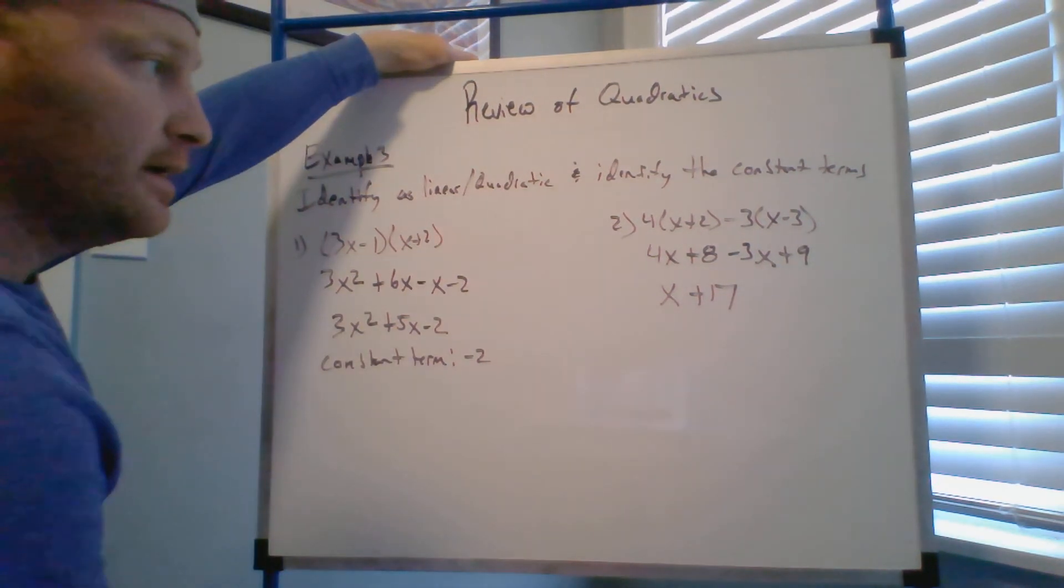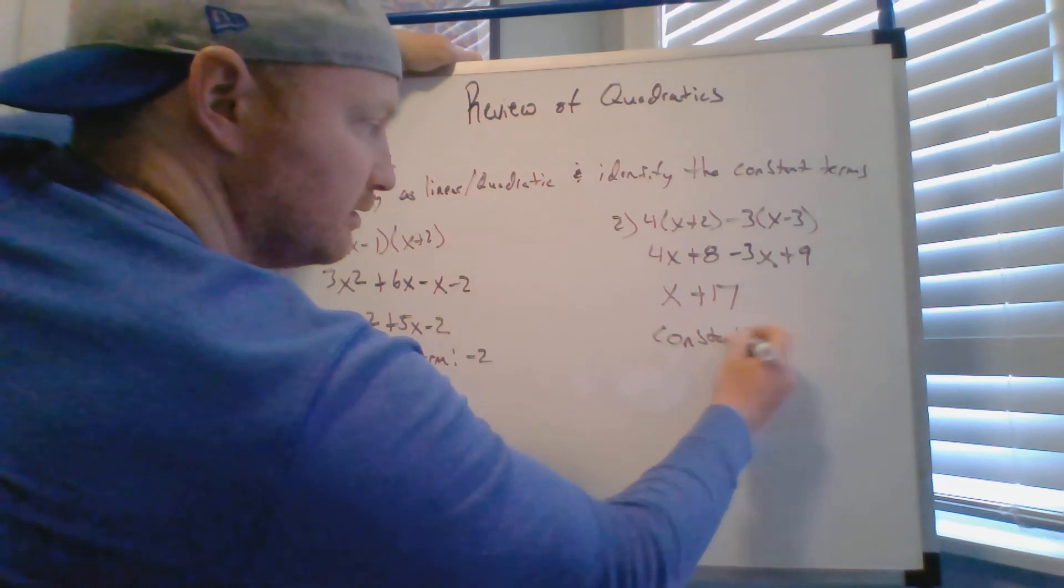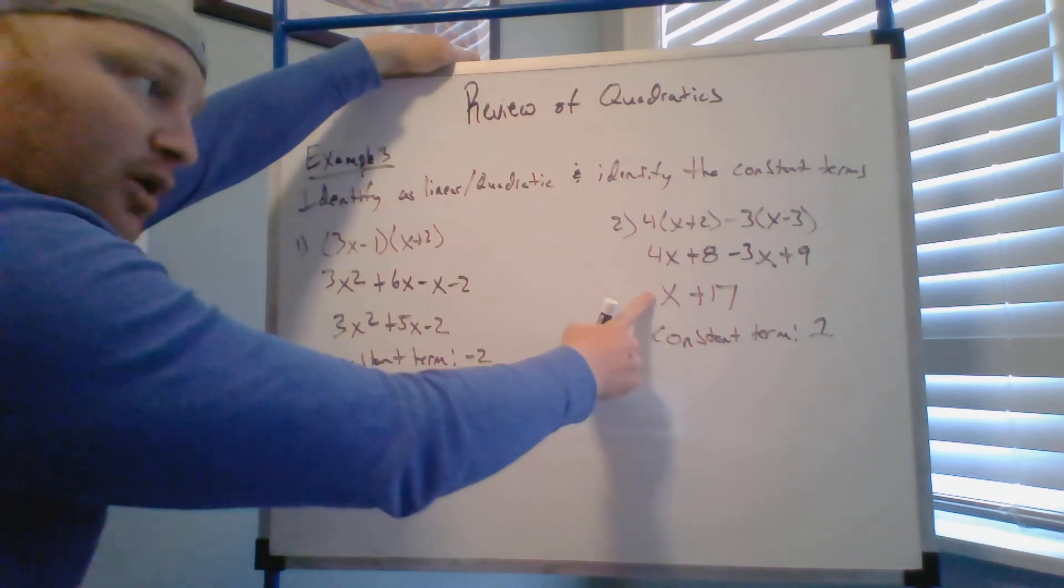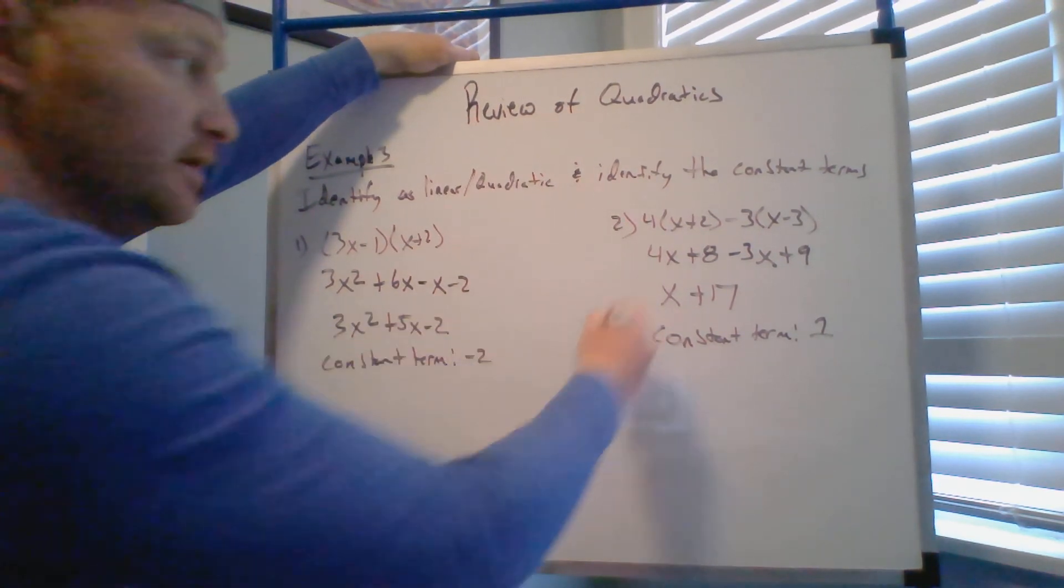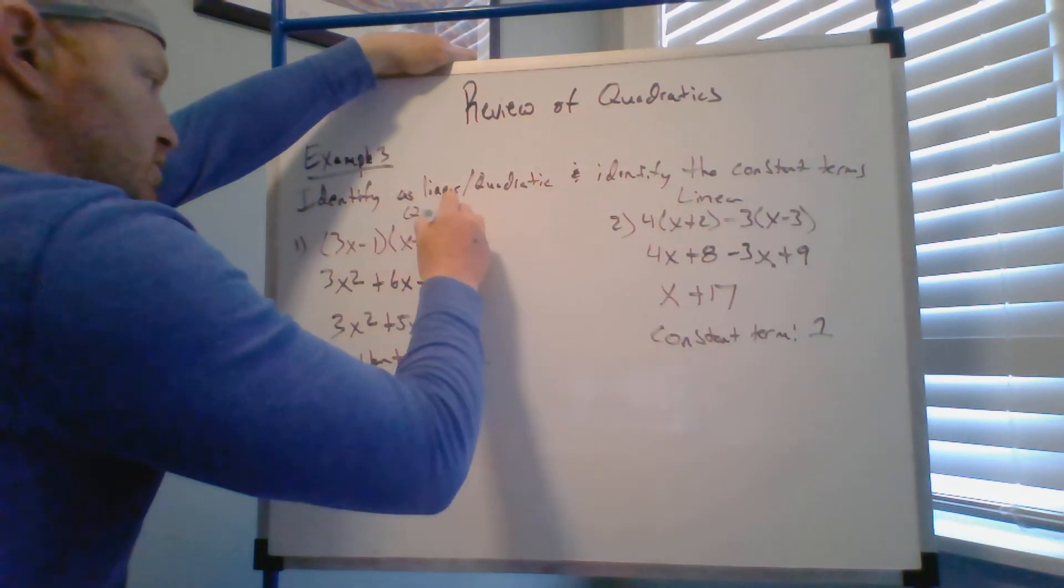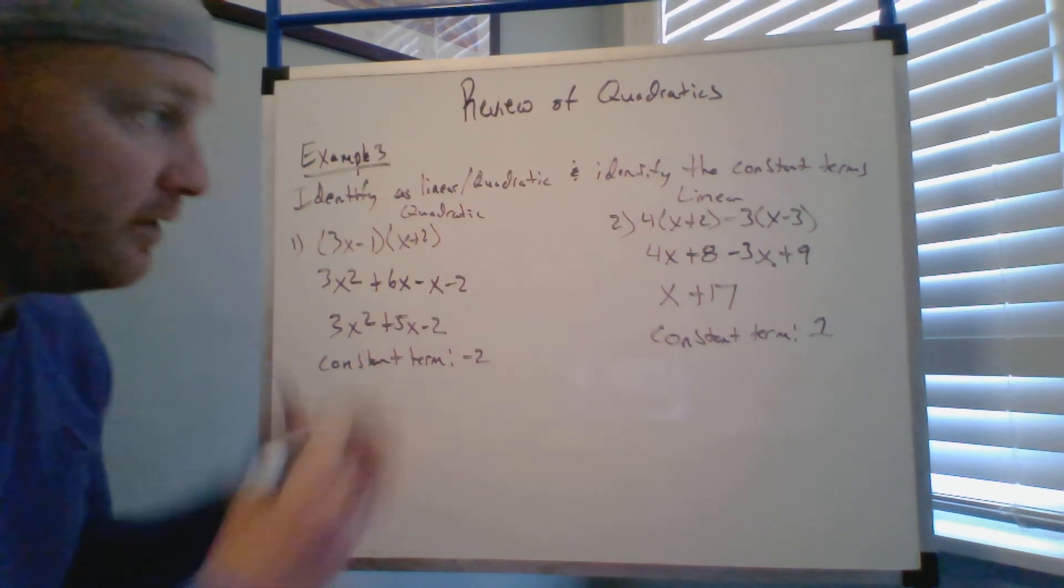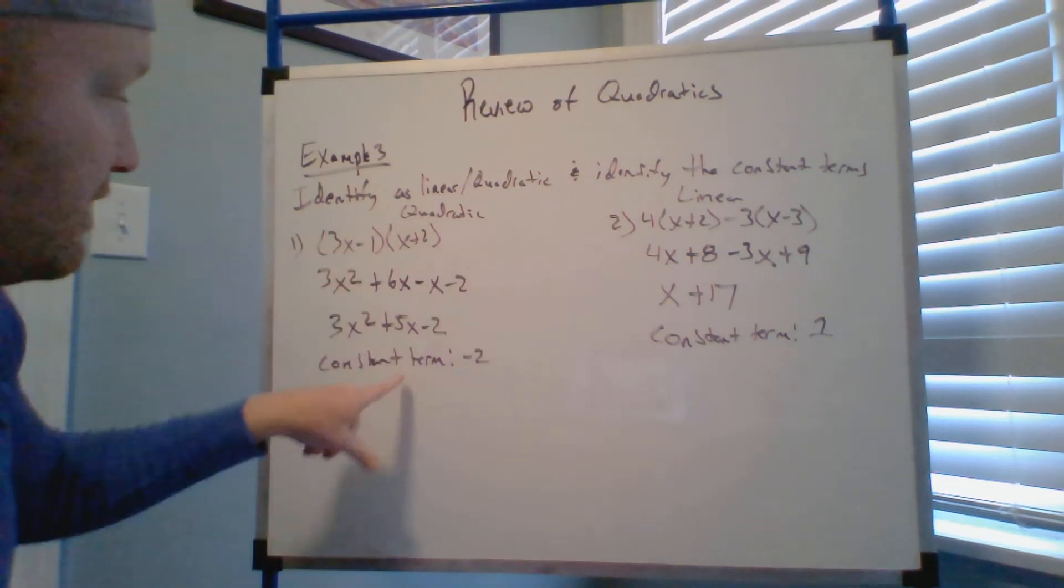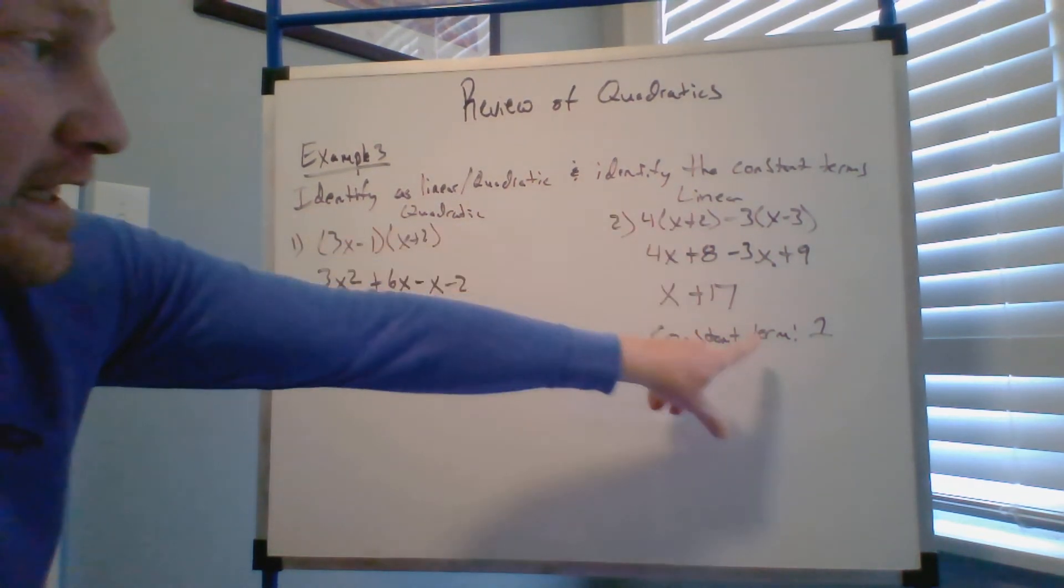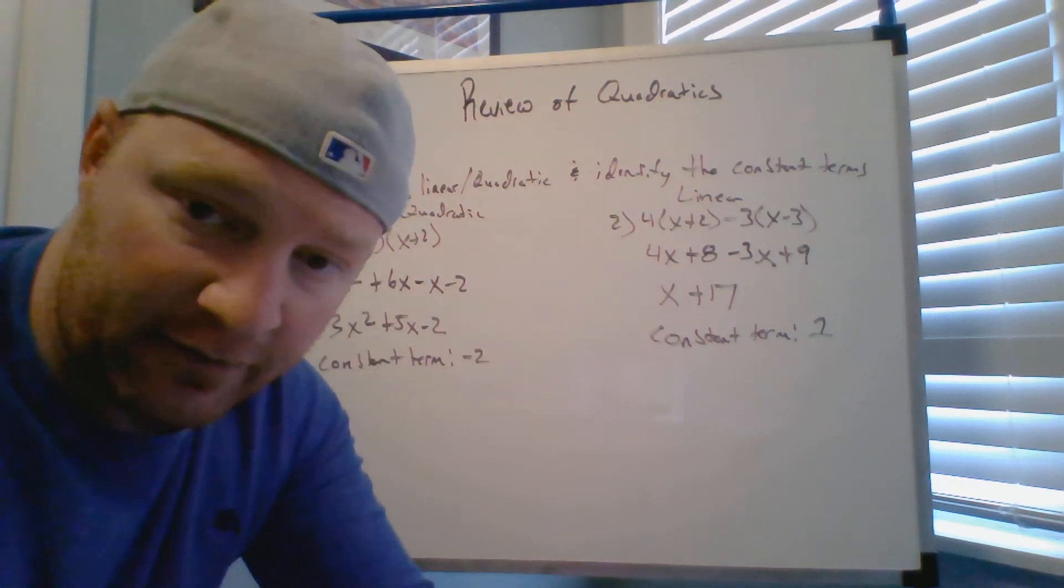Now for this one, your constant term is one. It's whatever the slope is of this linear equation. So this is linear, this is quadratic. Remember the key difference between constant terms in both of these expressions: constant term for quadratic is the y-intercept, the constant term for the linear expression is the slope, the number in front of that x.